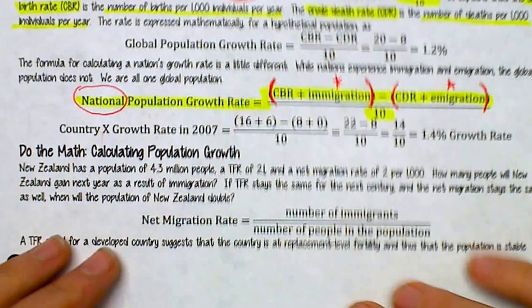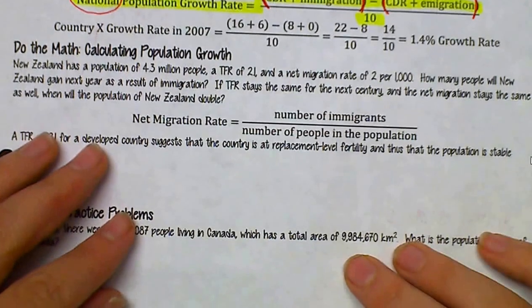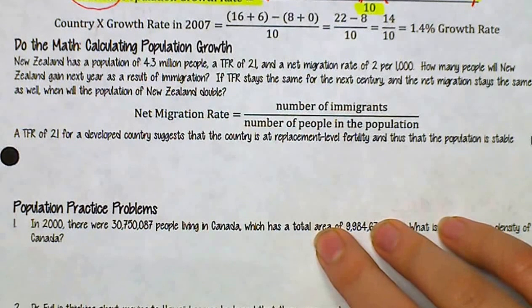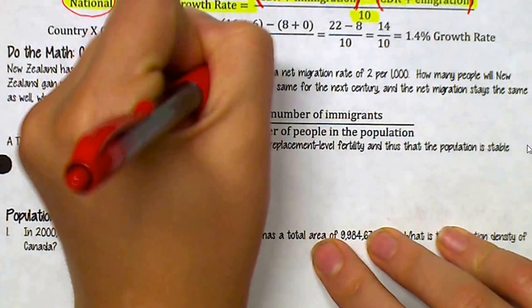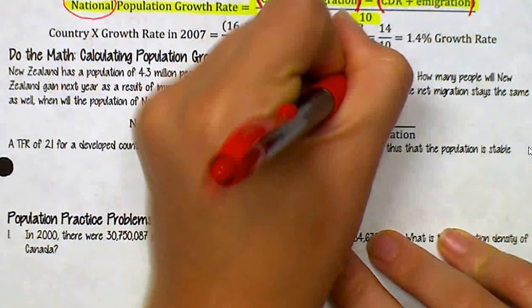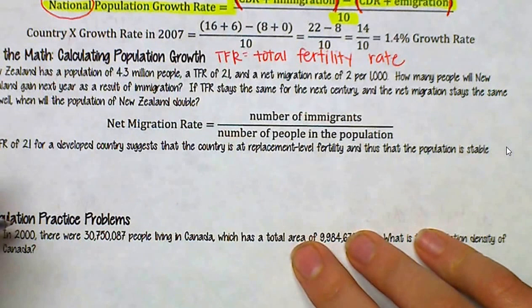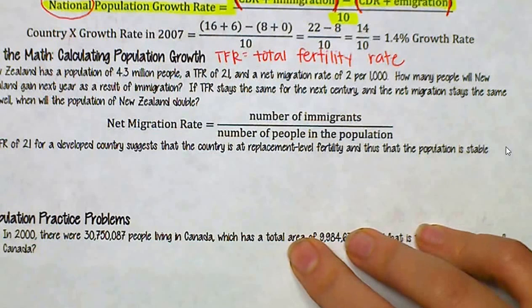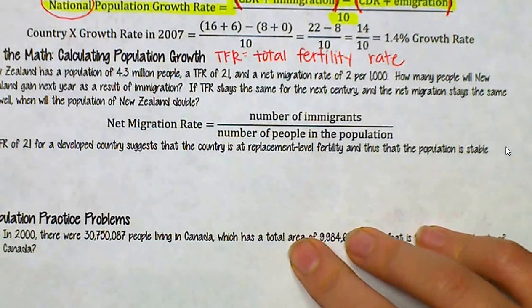Our first actual question is called 'Calculating Population Growth.' New Zealand has a population of 4.3 million people, a TFR — total fertility rate — of 2.1, and a net migration rate of 2 per thousand. There are actually two questions: how many people will New Zealand gain next year as a result of immigration, and if TFR and net migration stay the same, when will the population of New Zealand double?